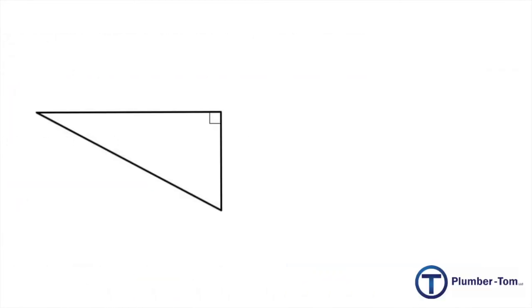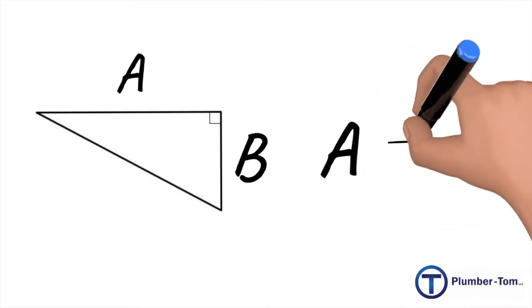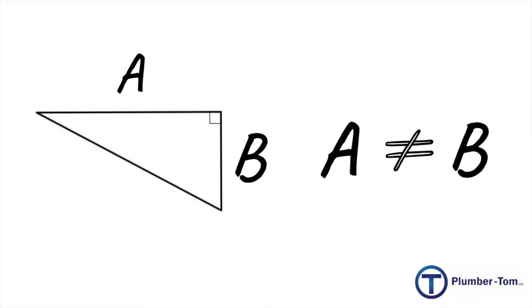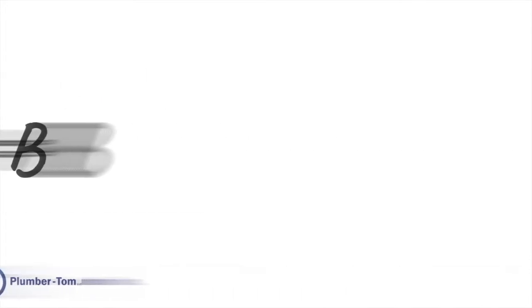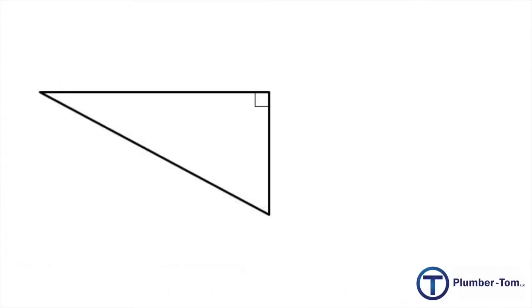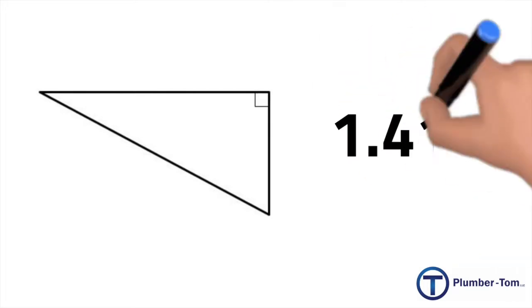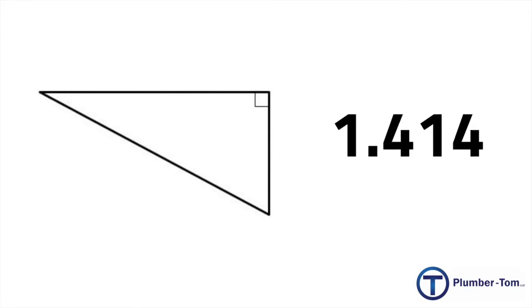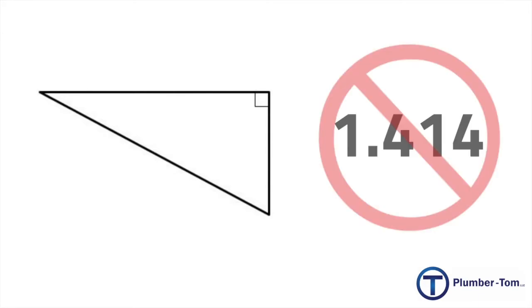In most cases, the triangle created by the offset and the rise has sides that are not the same length, so a does not equal b. In addition to the 90-degree angle, there are two other angles in this triangle which are not 45 degrees, and while they could be calculated, that's not something we need to know in order to calculate a rolling offset. It is important to note that because this triangle has two sides that are not the same length and we're not dealing with 45-degree angles, we cannot use 1.414 to calculate the diagonal.